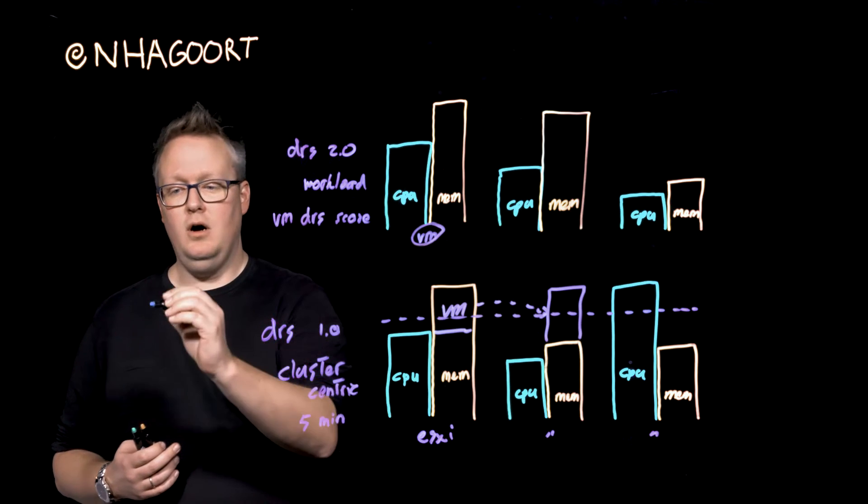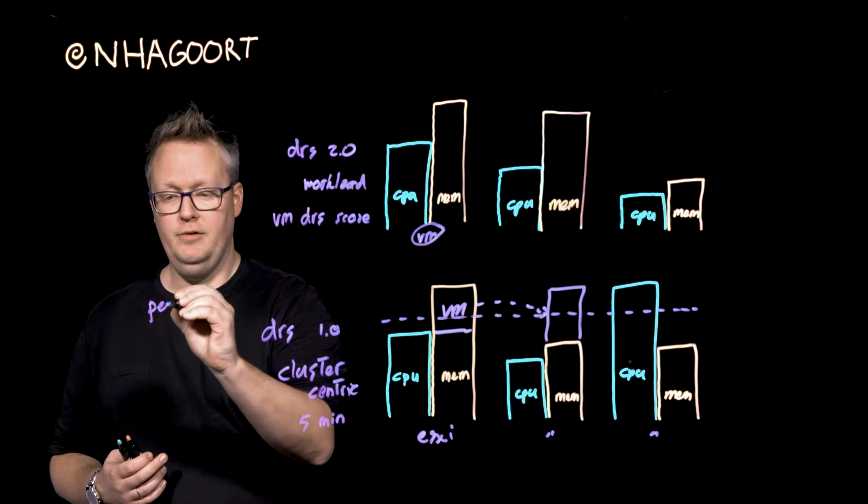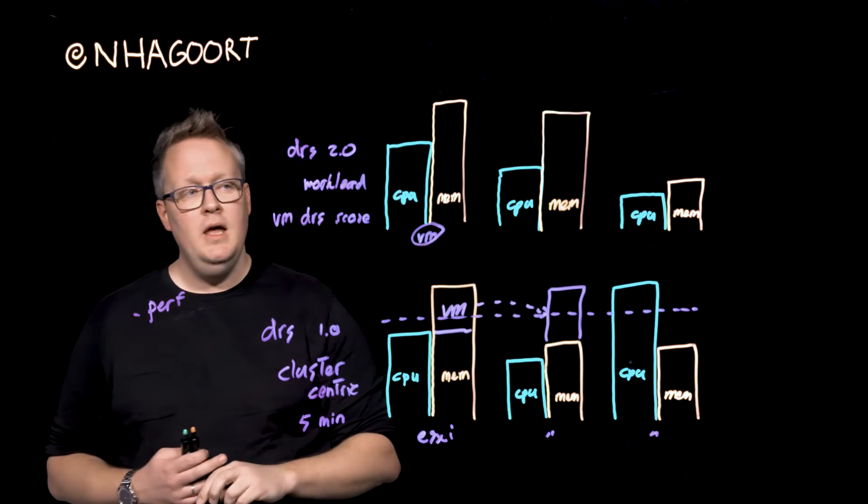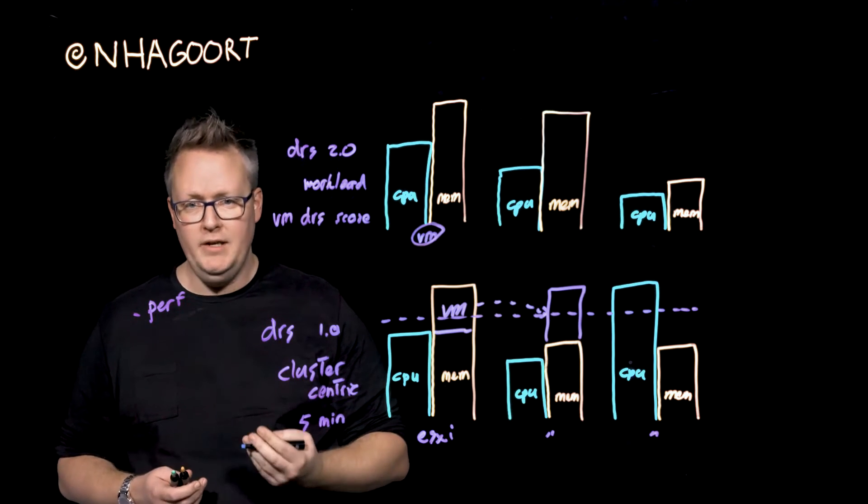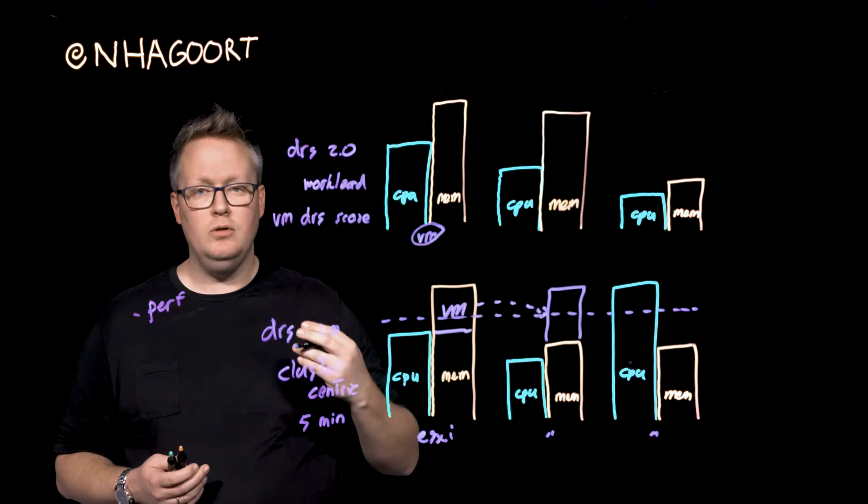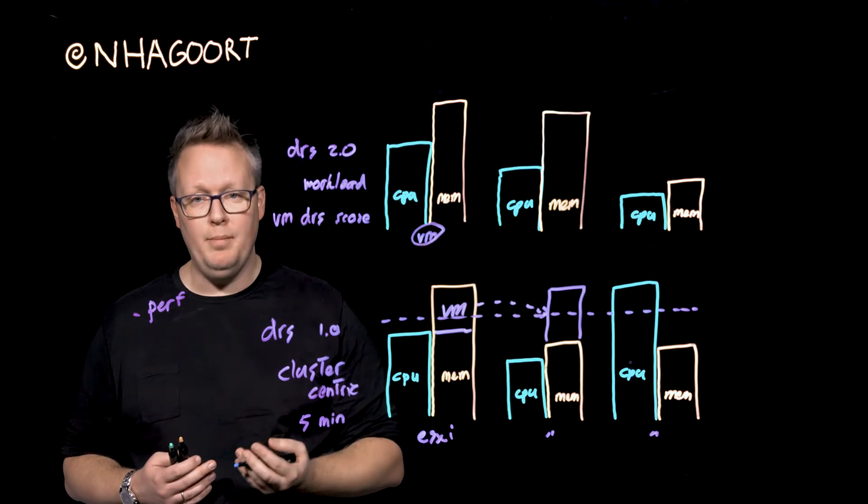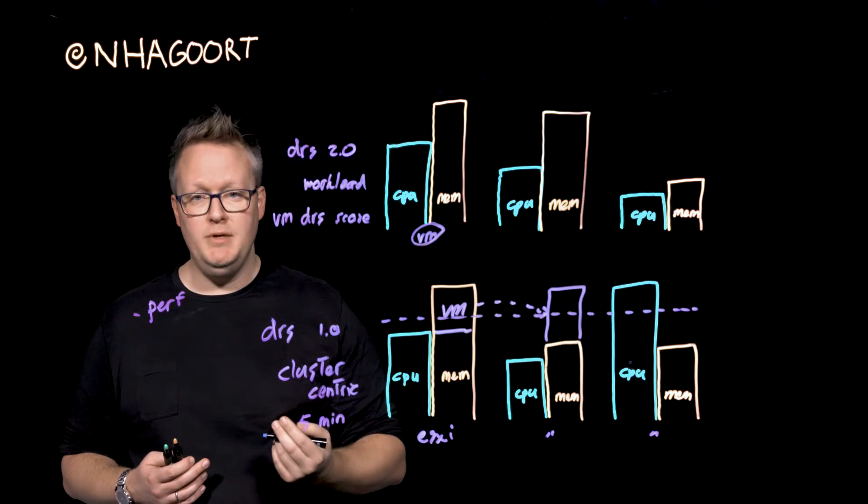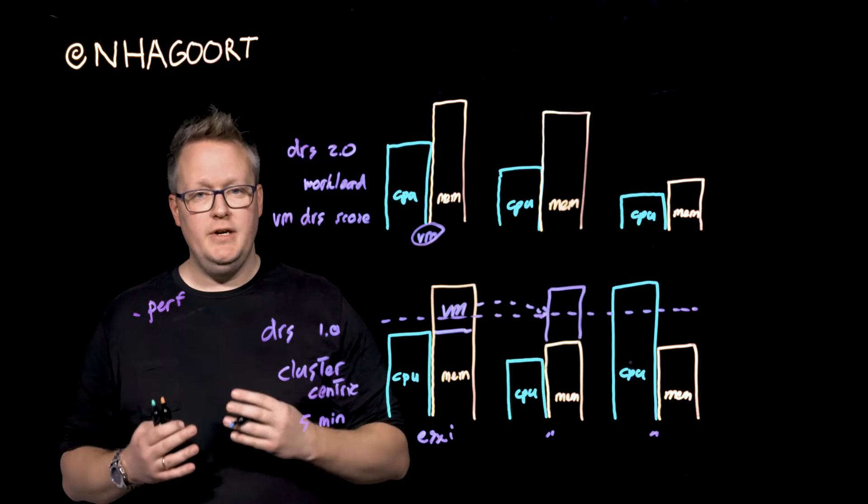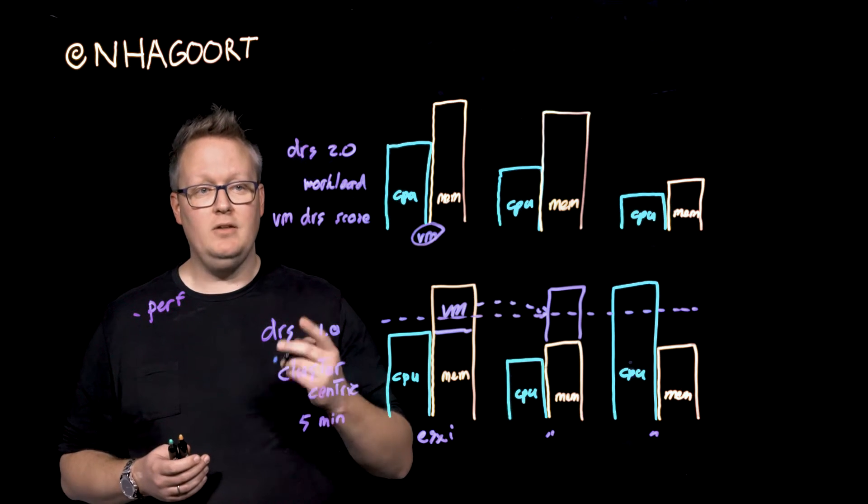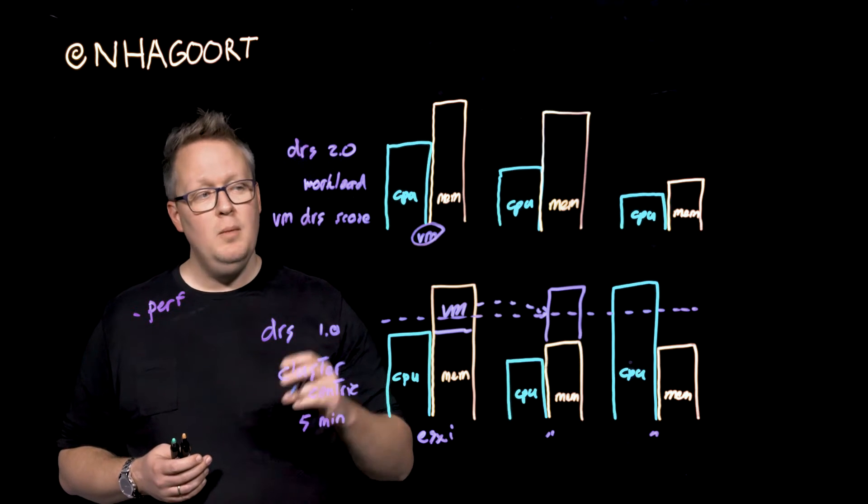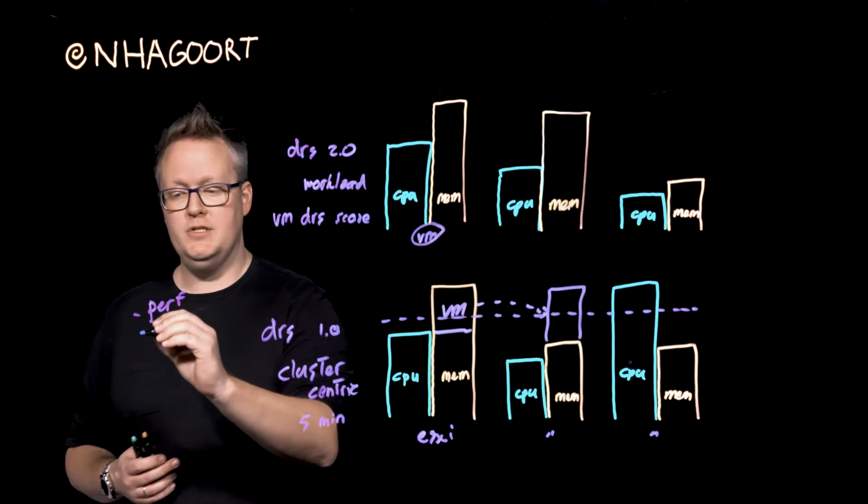The first ones are basically performance-driven. Think about CPU readiness time. Think about VM memory swap, about CPU cache behavior. All those metrics have a great impact on the VM DRS score. But it's not only about the performance as well.